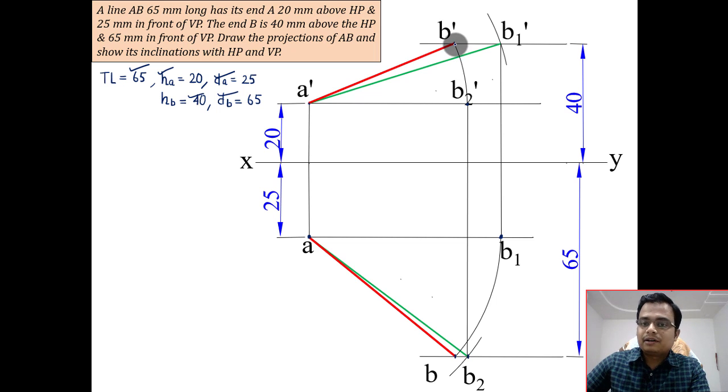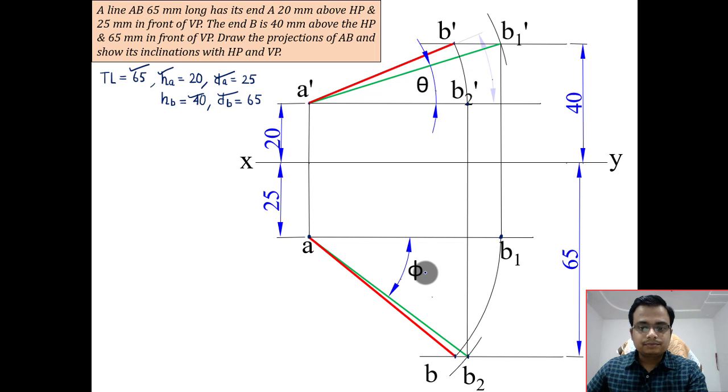Join B dash with A dash to have the final front view. And if you want to check, you can drop a line from B dash - it is going to exactly coincide at this point B. If it's a straight vertical line, that will happen for sure.